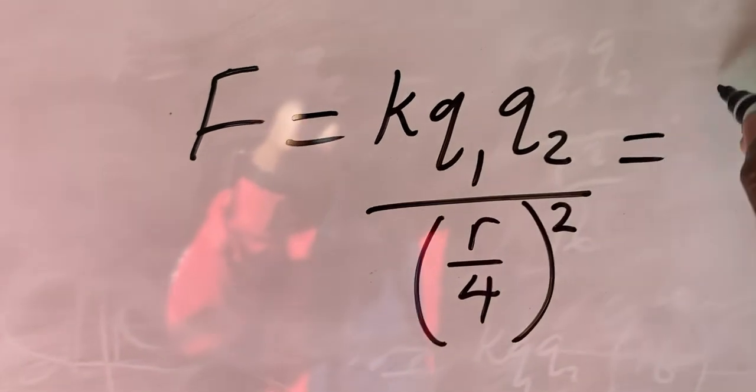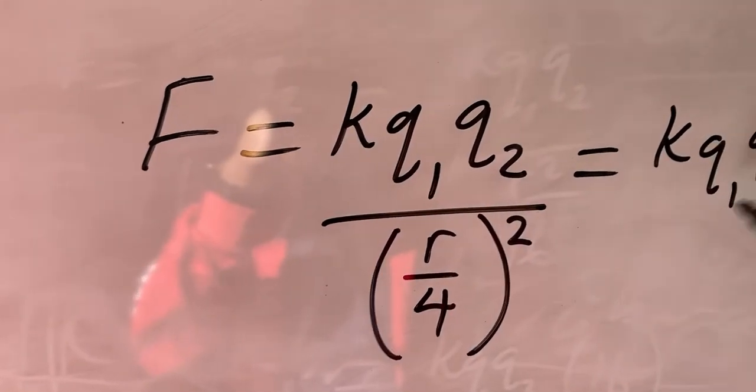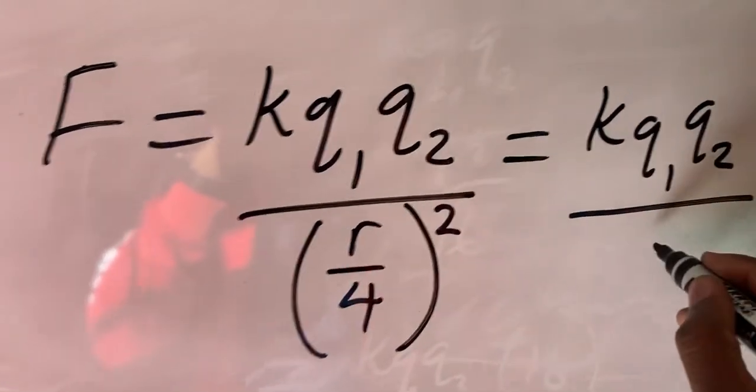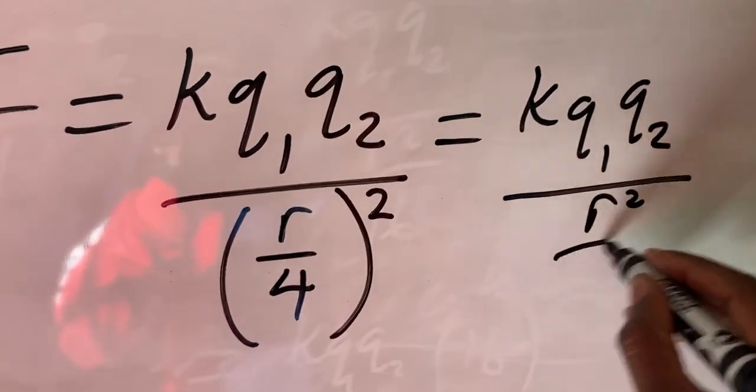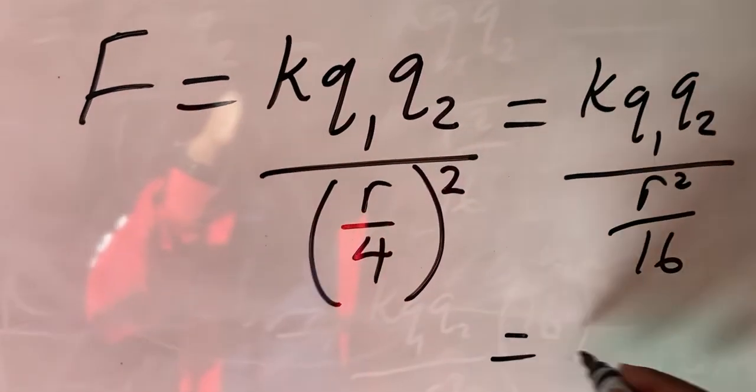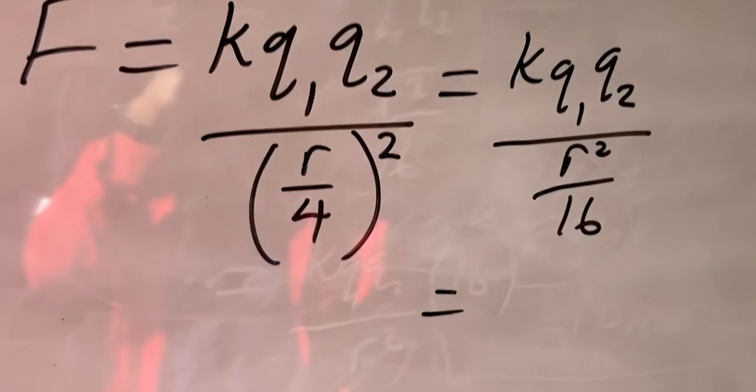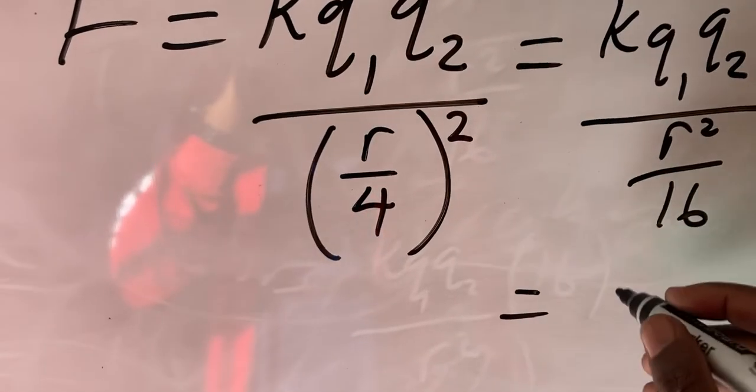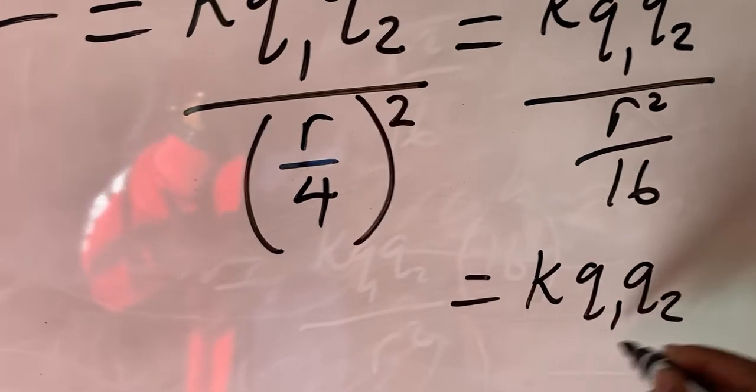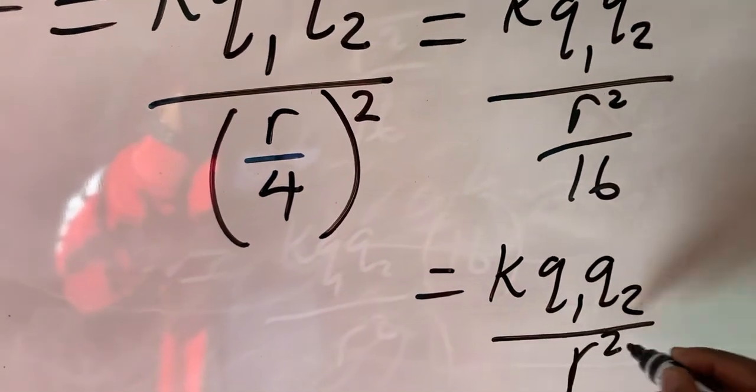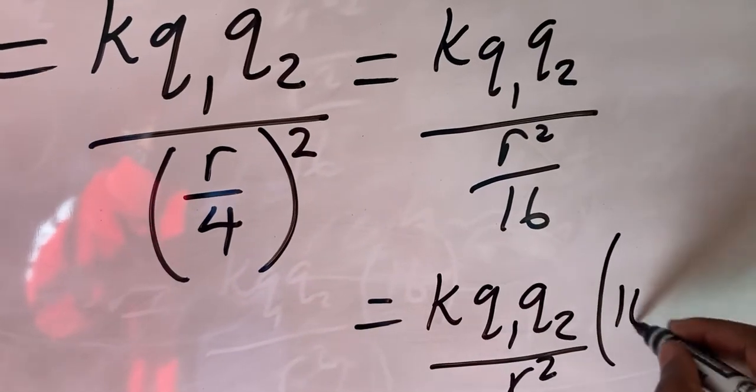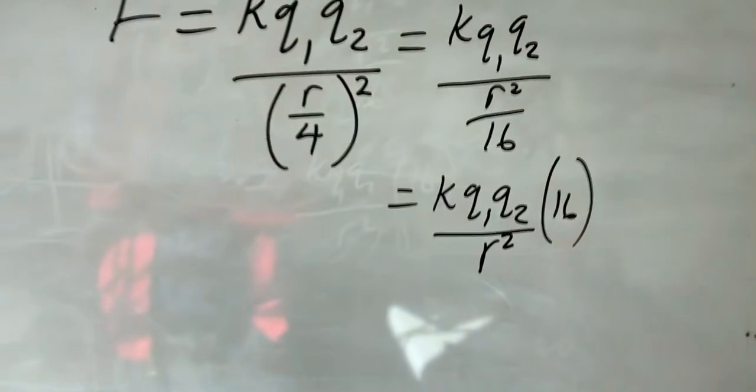We'll have k q1 q2 all over, if we take this square inside, we'll have r squared divided by 16, like this. If we further simplify this, you know if you are dividing a fraction by a fraction, you have to invert, right? So we have k q1 q2 over r squared, this 16, since we are inverting, it becomes a numerator, so you have 16 here, like this.